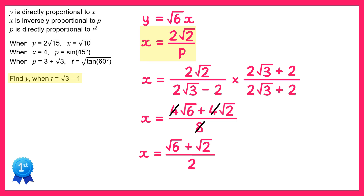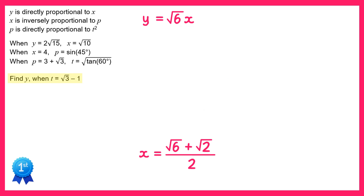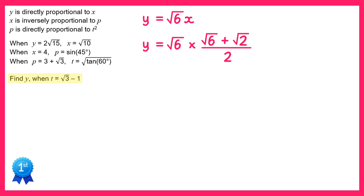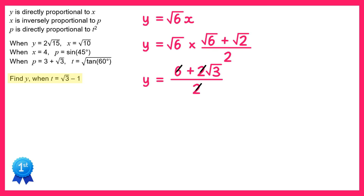Now we're almost there — we have the value of x, so substituting that into the top formula gives us y. So y equals root 6 times x: on the top we have root 6 times root 6 which is 6, and root 6 times root 2 which is root 12. Root 12 simplifies to root 4 times root 3, which is 2 root 3. There's now a common factor of 2 to cancel, giving y equals 3 plus root 3, which is the answer to the question.